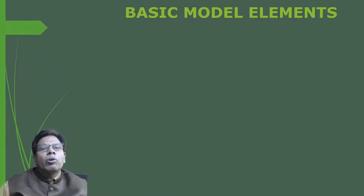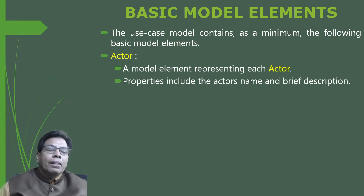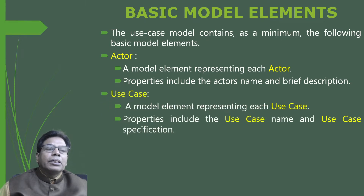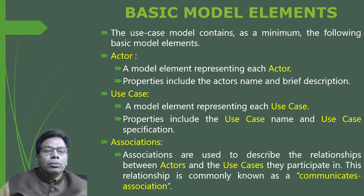The use case model contains a minimum of the following basic model elements. The first is the actor — the model element representing each actor, having properties: name and brief description. The second element is the use case — the model element representing each use case, with properties: use case name and use case specification. The third is associations, which are used to describe the relationship between actors and the use cases they participate in. This relationship is commonly known as the communicates association.